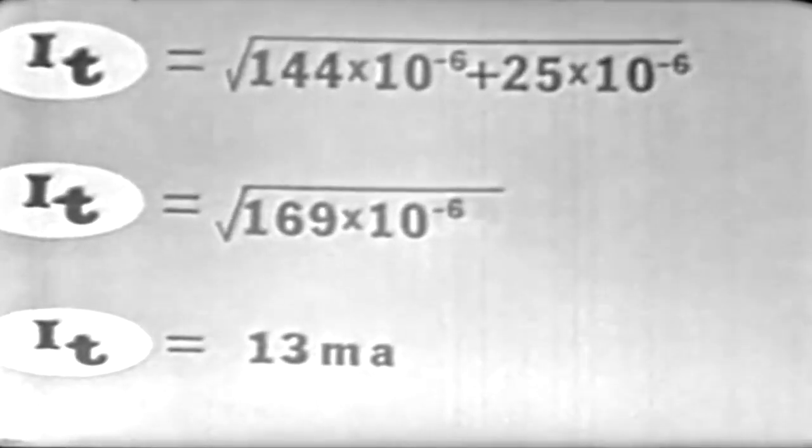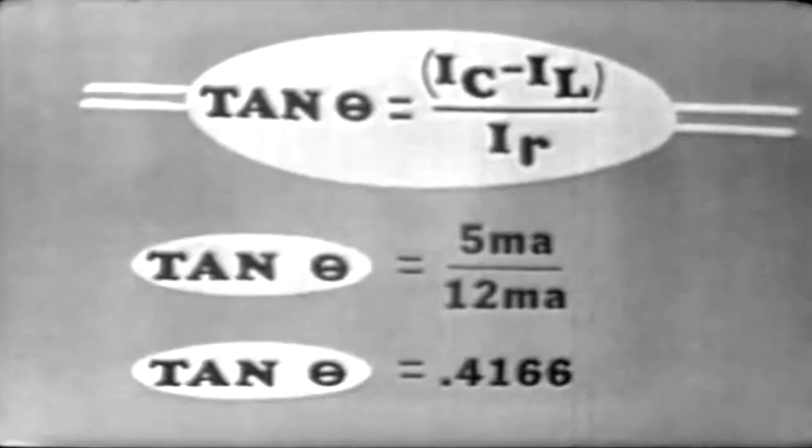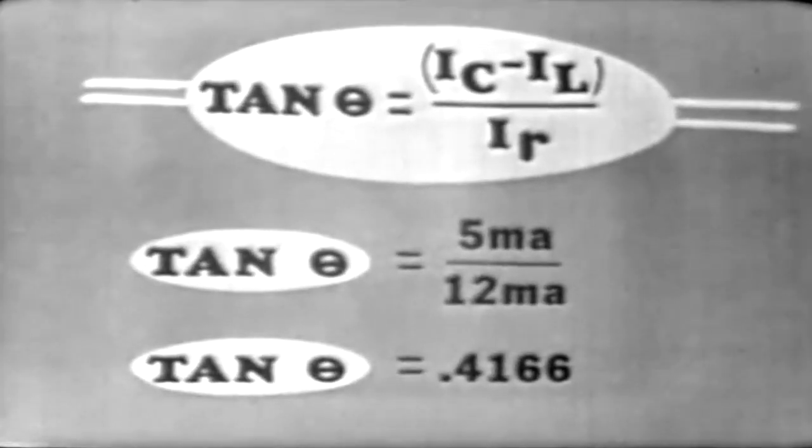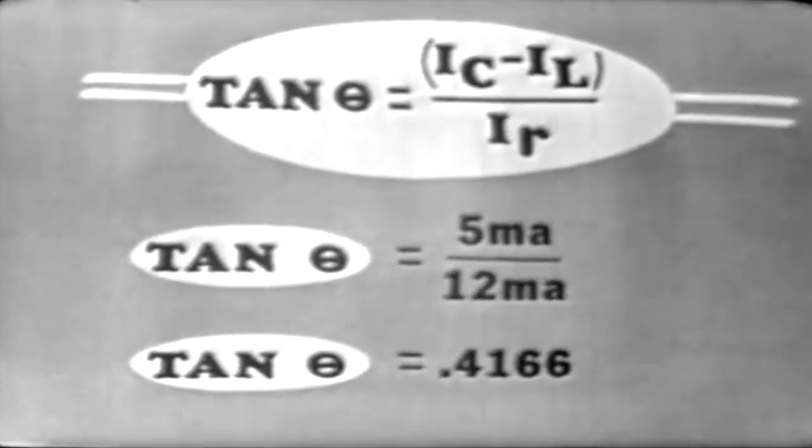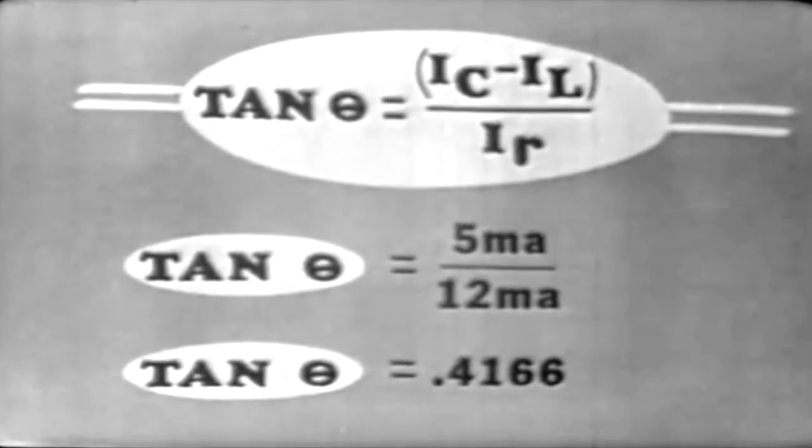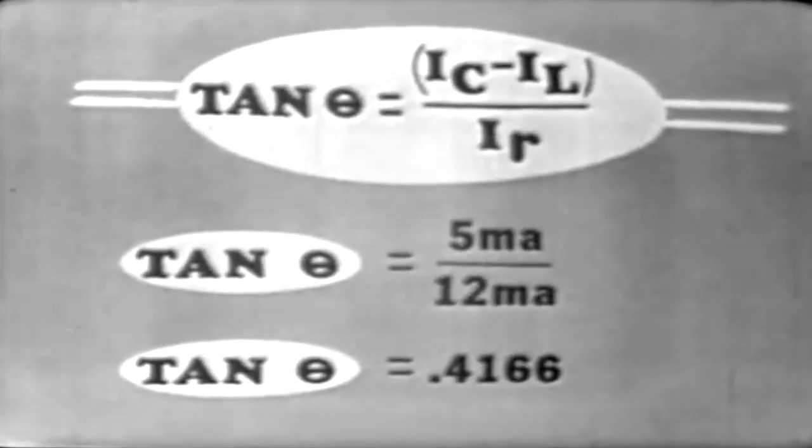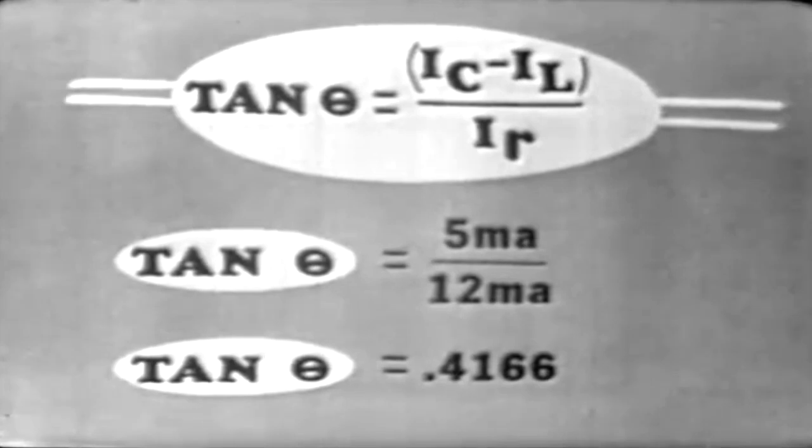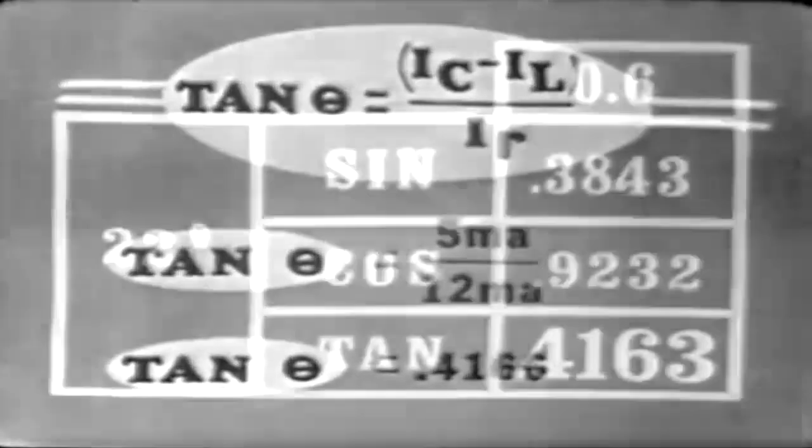What about the angle of our current? We can use the tangent trig function rather than a protractor to determine this angle. The tangent of angle theta is equal to IC minus IL divided by IR. Substituting into this, the tangent of angle theta is equal to 0.4166. Looking at our trig table, 0.4166 is nearest to 0.4163, which is 22.6 degrees. So, here, we have determined our phase angle using our tangent trig function.